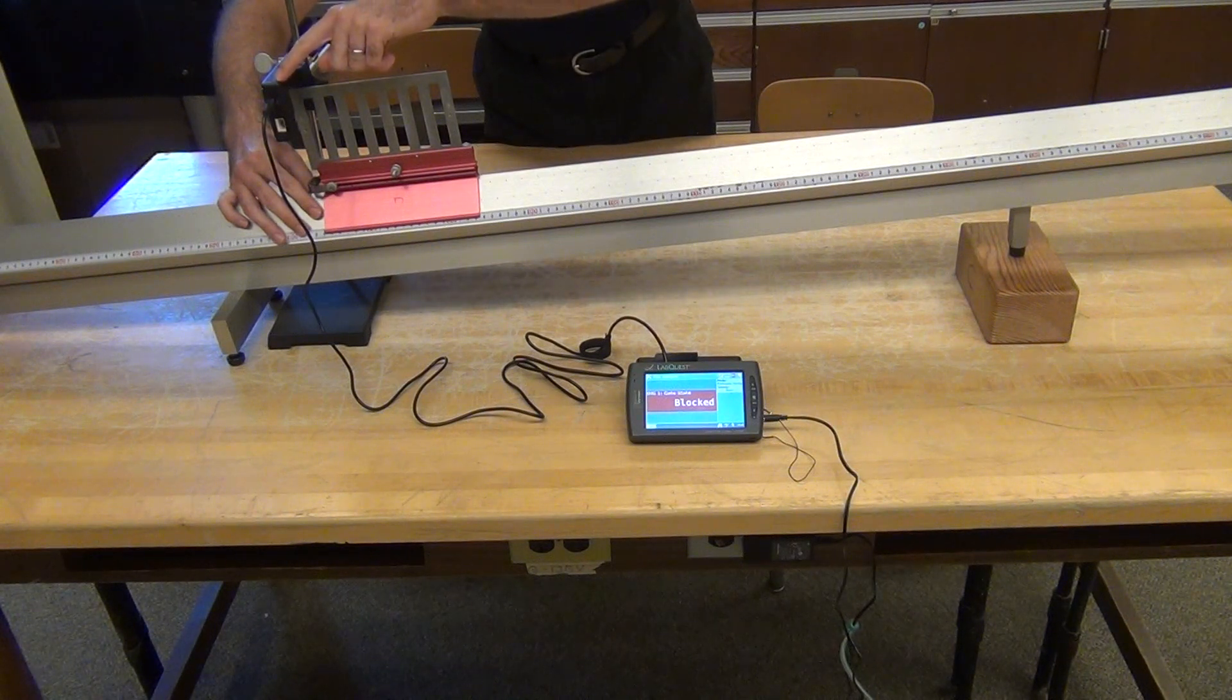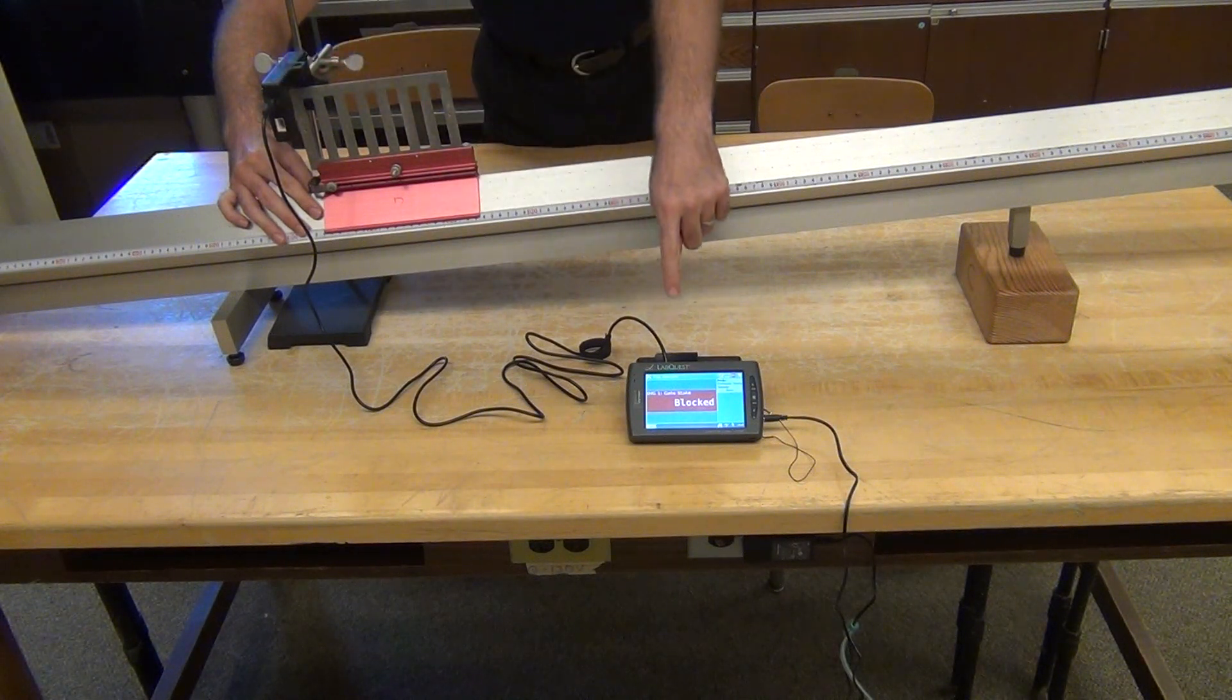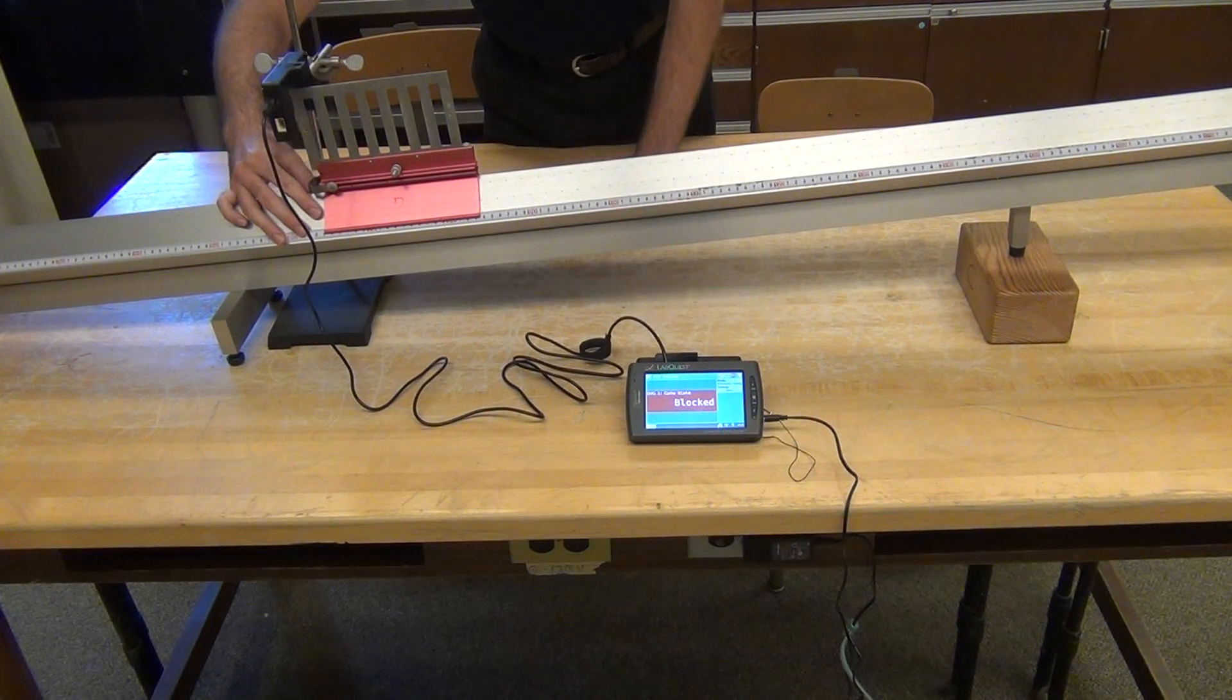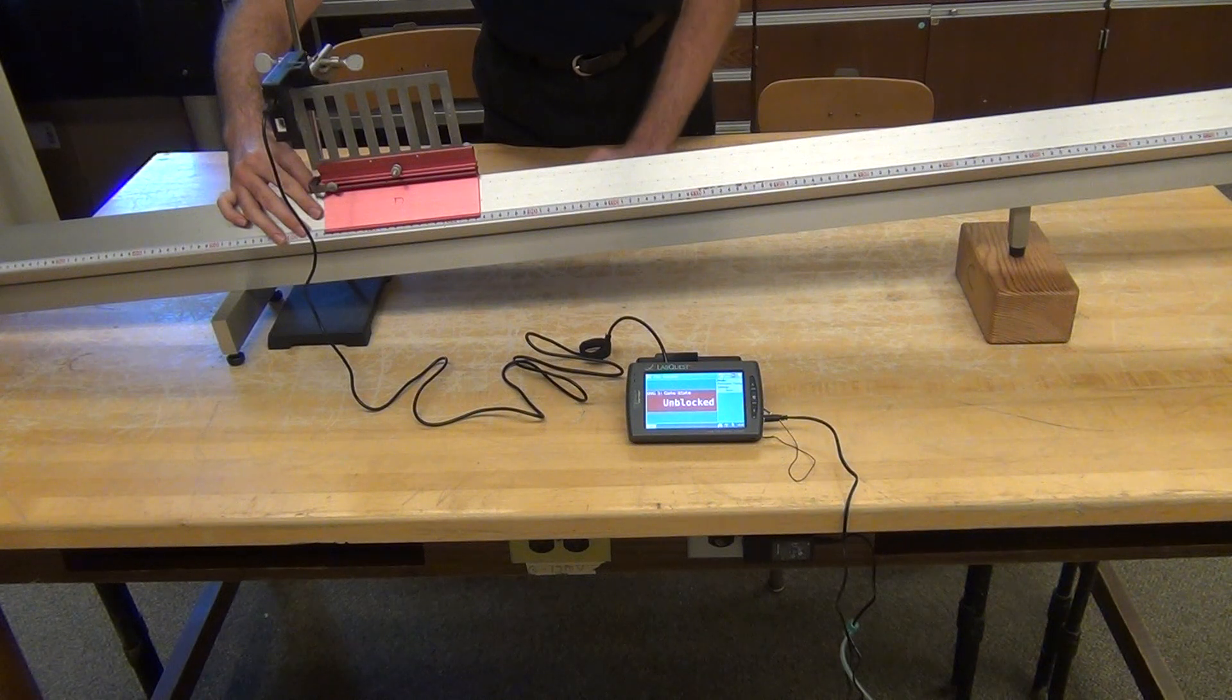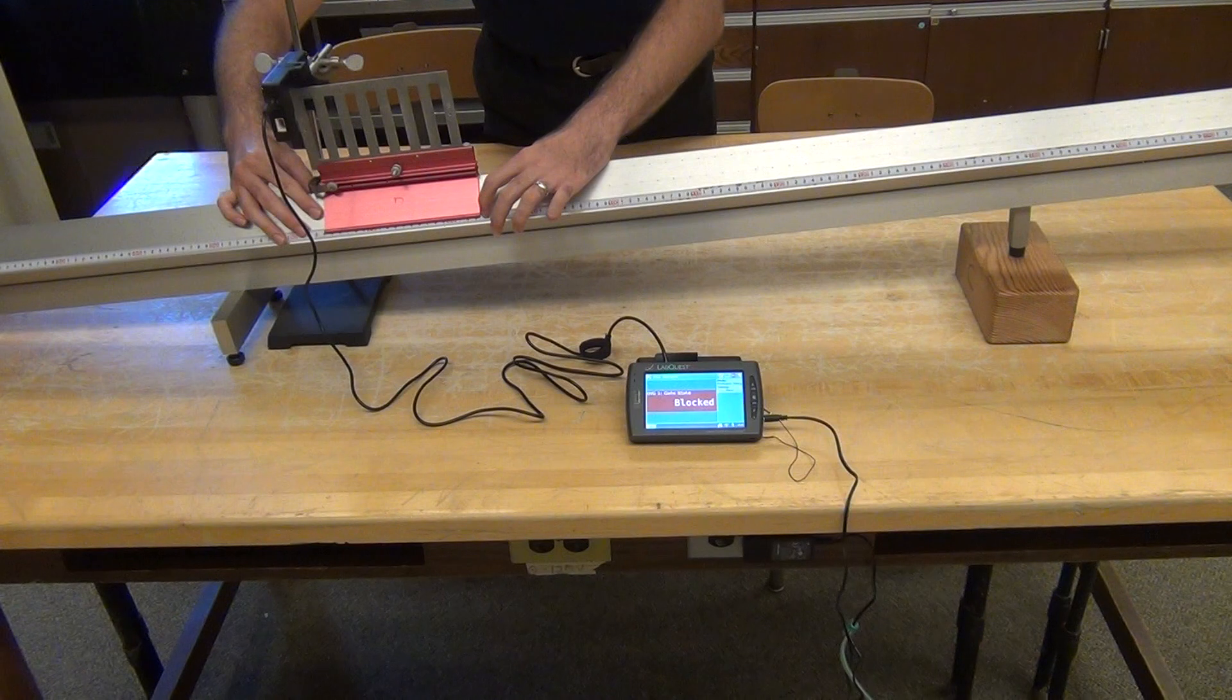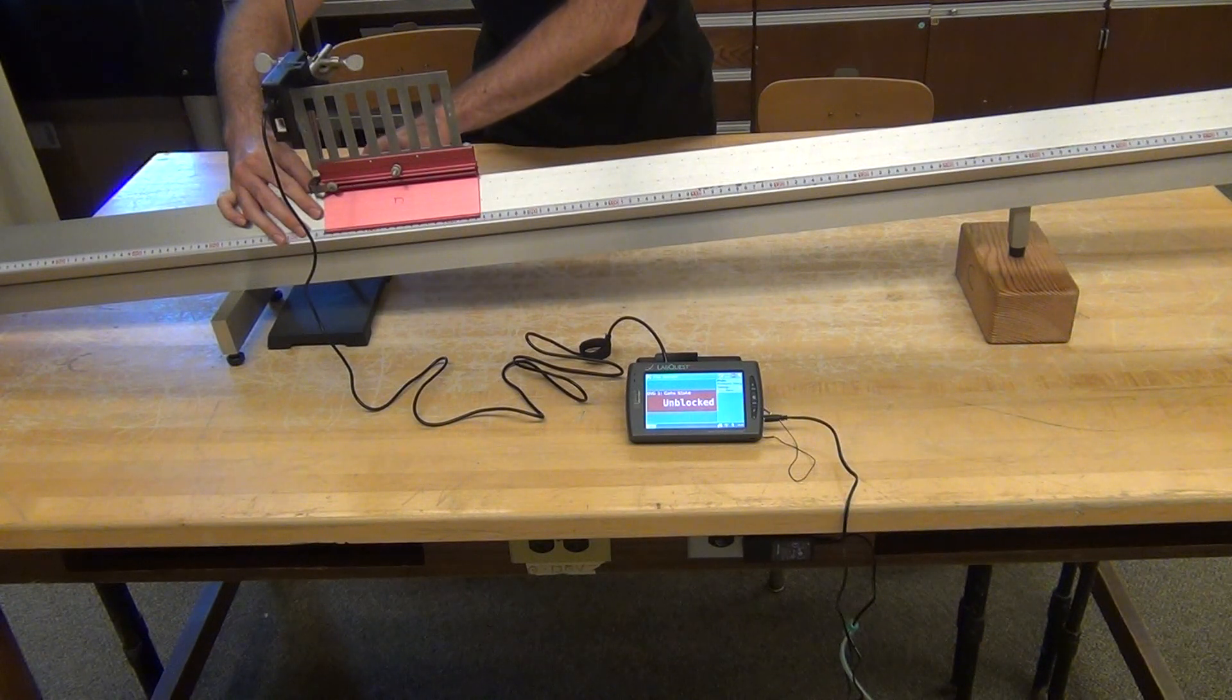I can see that either by looking at the light on top of the Photogate or looking for the blocked status on the Lab Quest. When it's at the position where it just barely breaks, I record that position in my lab notebook, or on a piece of paper or on my computer.